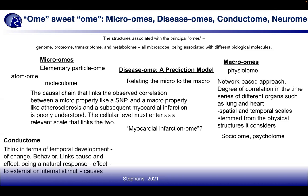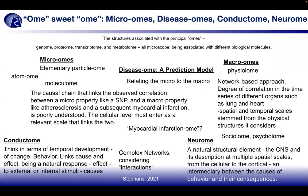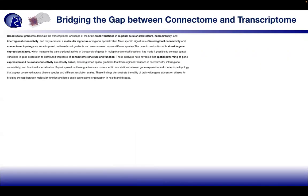The conductome links cause and effect — the natural response to external or internal stimuli — as complex networks considering interactions. The neuro-ohm or neurome is the natural structural element of the CNS, describing it at multiple spatial scales from the cellular to the cortical and all intermediary levels between the causes of behavior and their consequences.